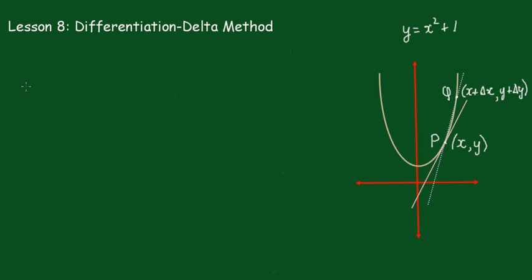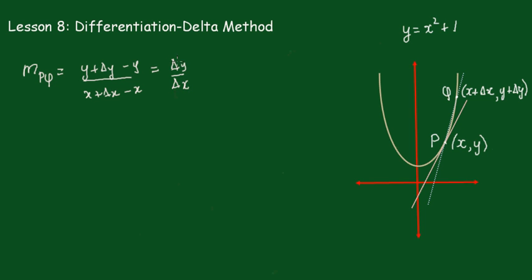Very similarly, we'll start off with the gradient of the secant VQ. The gradient of the secant VQ is simply the difference in the y values: (y + Δy) and (x + Δx), where Δx is a little bit of x and Δy is a little bit of y moved along. So that gives us (y + Δy − y) over (x + Δx − x), which simply becomes Δy over Δx — the change in y over the change in x.